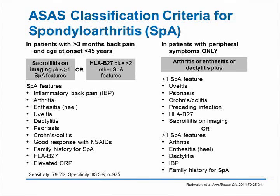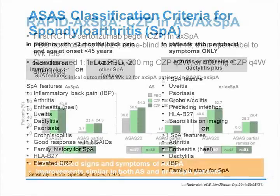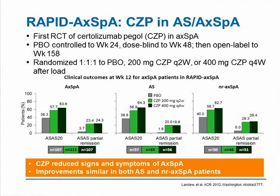Now I'll go directly to clinical studies presented at the meeting in Washington in November. The first is the RAPID axial SpA study — certolizumab pegol in axial spondyloarthropathy. This is the first randomized controlled trial of certolizumab pegol in axial spondyloarthropathy using the ASAS criteria. It is placebo-controlled at week 24, dose-blinded to week 48, and open-labeled to week 158, randomized one-to-one-to-one to placebo and two doses of certolizumab — 200 mg every two weeks or 400 mg every four weeks after loading.